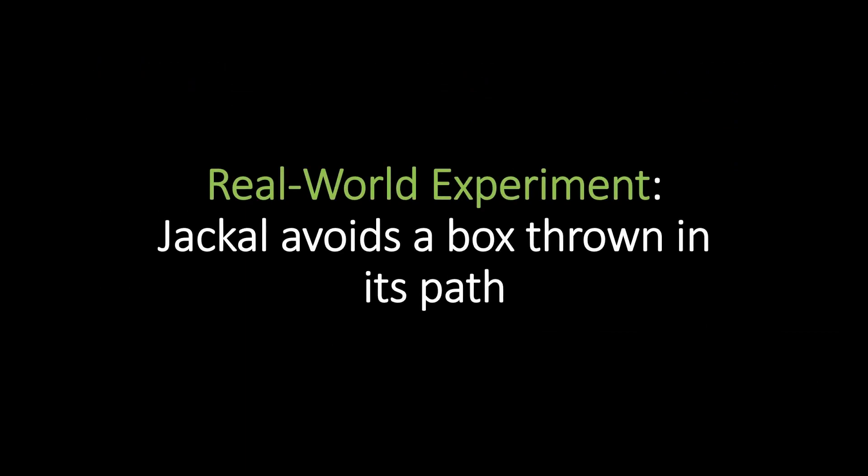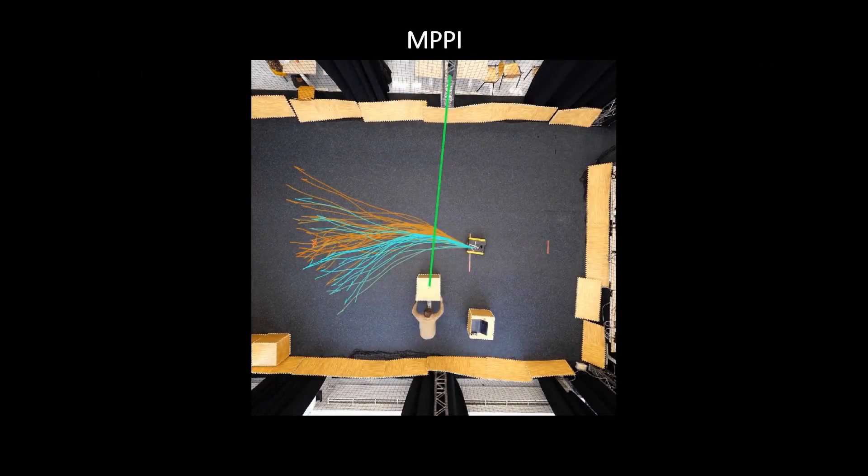At last, in the real-world experiment, a Jackal robot has to reach a goal as fast as possible when a box is unexpectedly thrown in its path. We visualize all the 50 best samples where the blue ones are the best ones and the orange ones are the worst ones. The green line represents the constant velocity prediction of the box used by the motion planner.